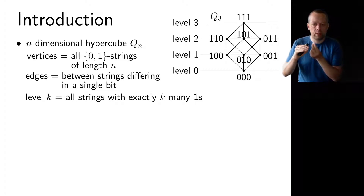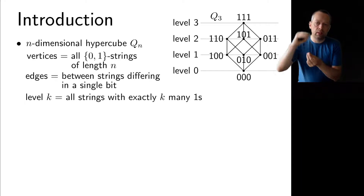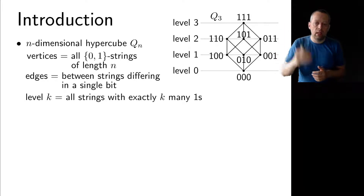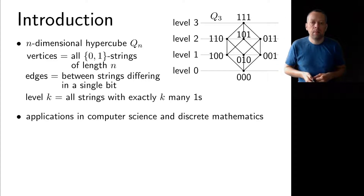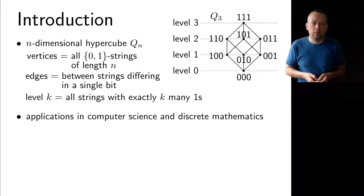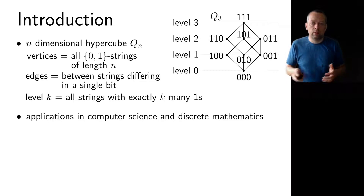On level zero there is just a single string, namely the all-zero string, and on the highest level there is only the all-one string, with all other levels k from zero up to n in between. This family of graphs is very important in computer science and discrete mathematics, and it is basically omnipresent wherever you look.